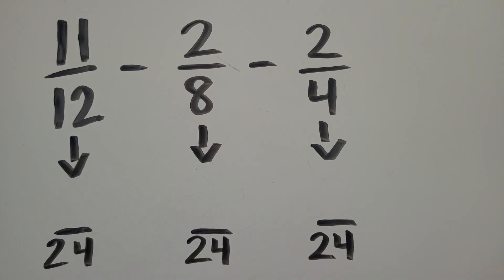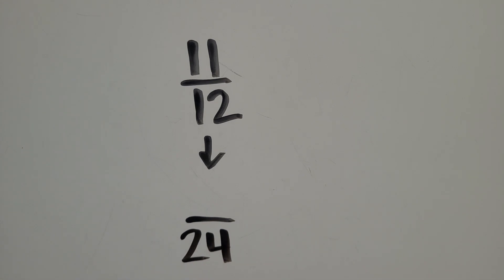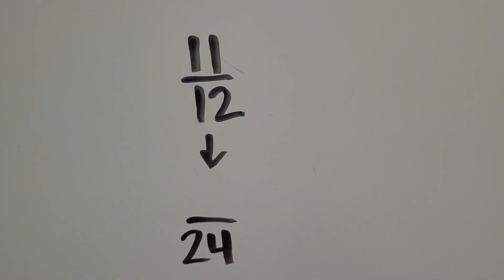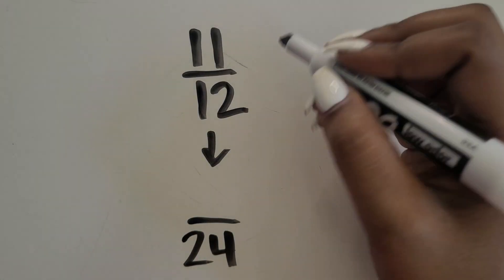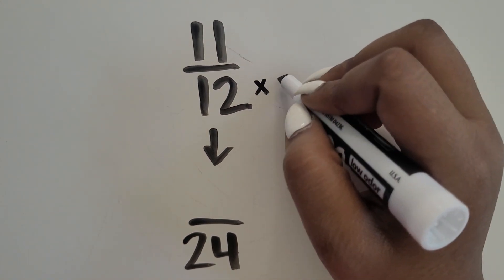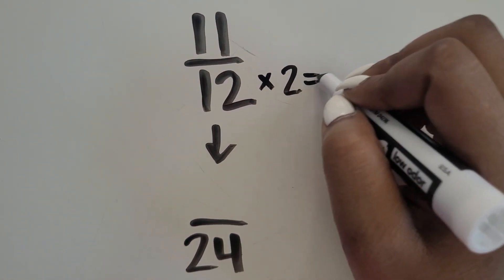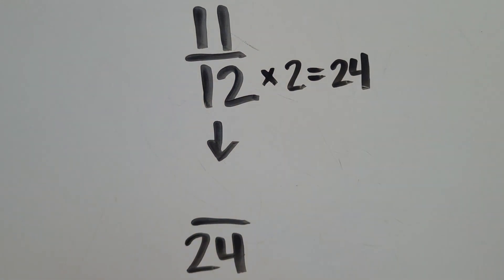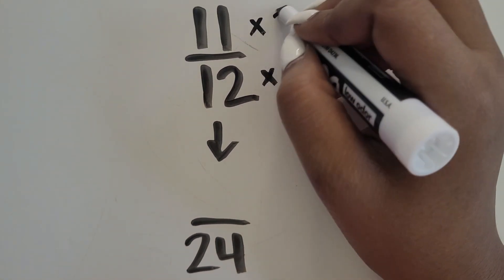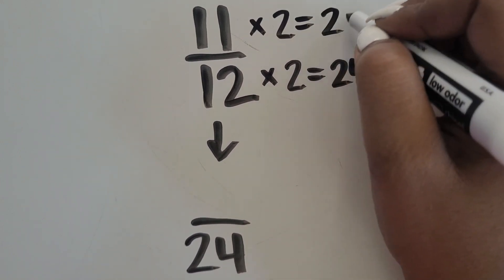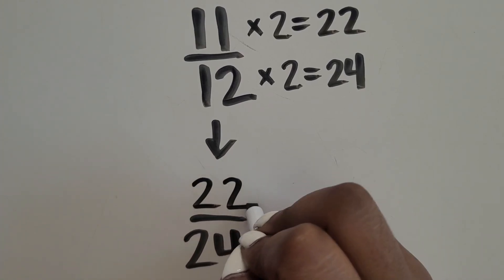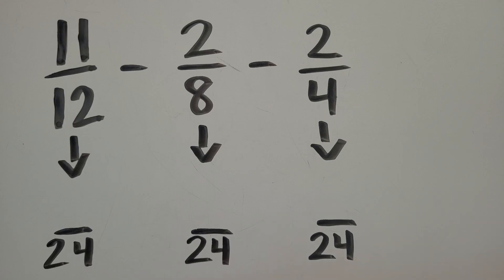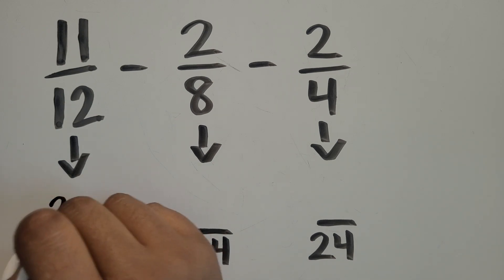Let's find out what each new numerator will be. We'll start with 11 twelfths. How many groups of 12 equals 24? 2. 2 times 12 equals 24. Let's do the same for the numerator: 2 times 11, or 2 groups of 11, equals 22. Our equivalent fraction to 11 twelfths is 22 twenty-fourths.